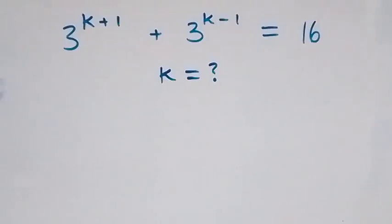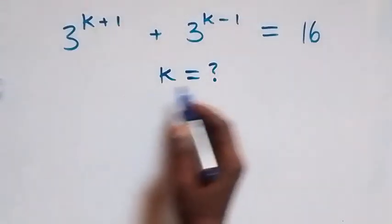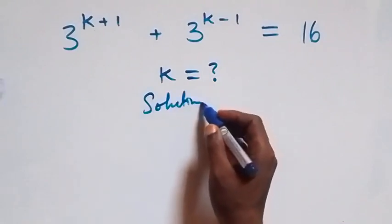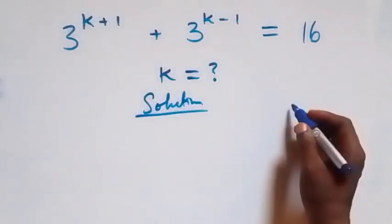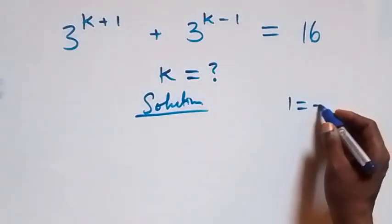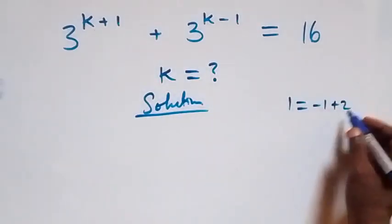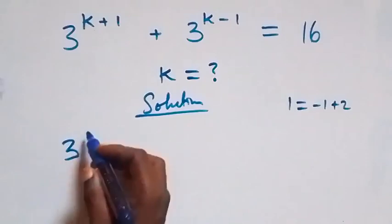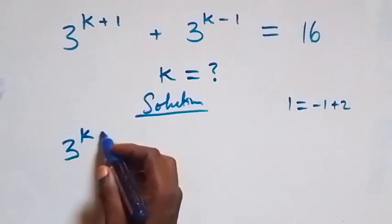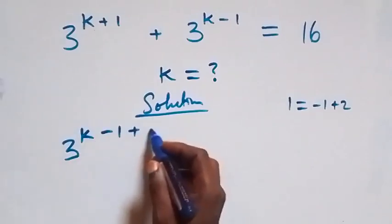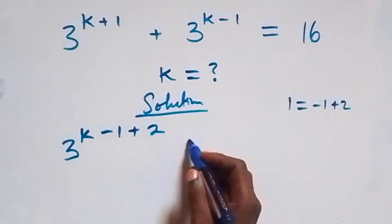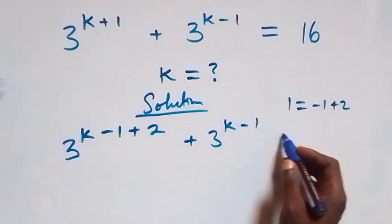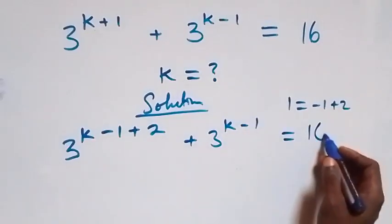Hello, you are welcome. How to solve this nice exponential equation. From what we have here, we can rewrite 1 as minus 1 plus 2, which implies we can write this equation as 3 raised to power k minus 1 plus 2, then plus 3 raised to power k minus 1, equals to 16.